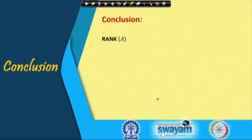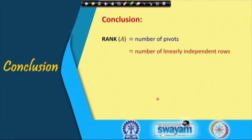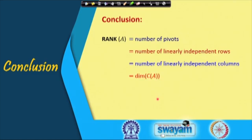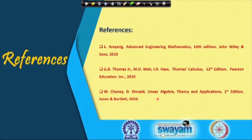In conclusion, we have seen various definitions of rank: the number of pivots in the row reduced echelon form; the number of linearly independent rows; the number of linearly independent columns; the dimension of the column space; and the dimension of the row space. We have also discussed rank in terms of determinants. Thank you for your attention.